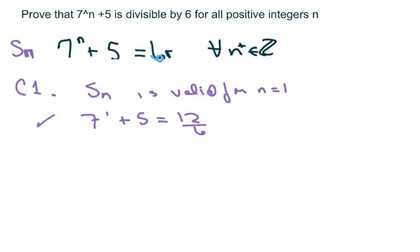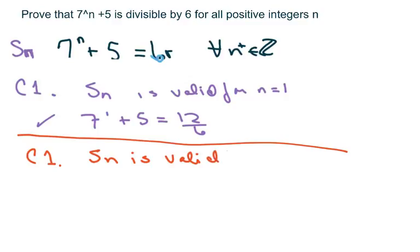Okay, so what we want to do is show for step 2, or condition 2, that assume S of n is valid for n equals k.